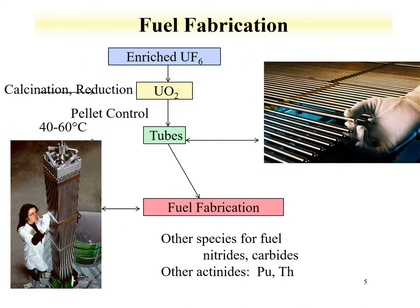Once uranium is enriched, it can be pressed into pellets, primarily UO₂, for existing commercial nuclear reactors. Those pellets are then inserted into tubes, those tubes into assemblies, and these assemblies get placed inside a reactor. Other species of uranium can be used for fuel, such as nitrides, carbides, and metals, as well as other actinides.